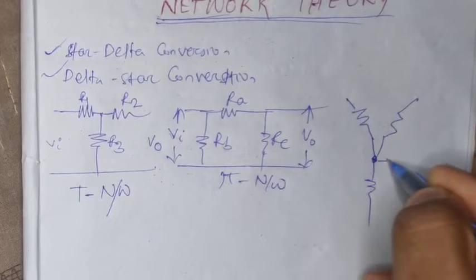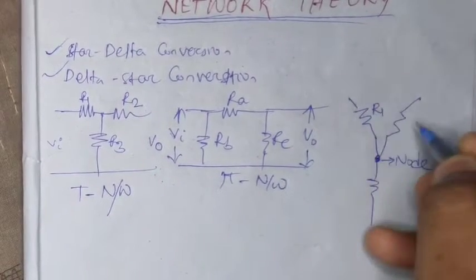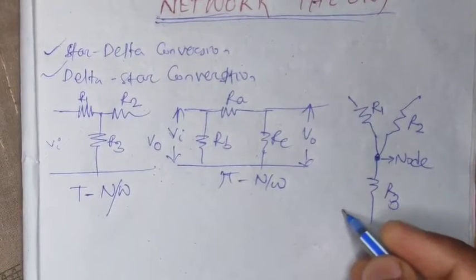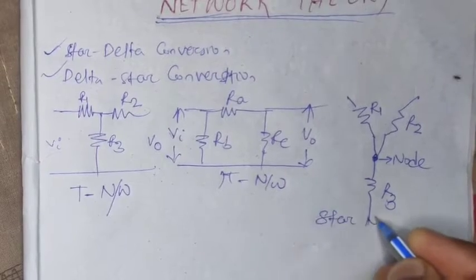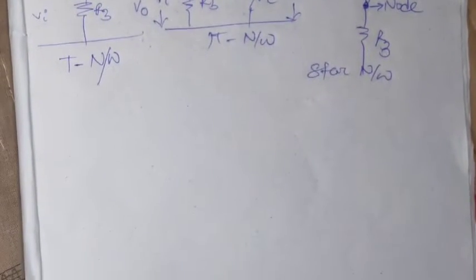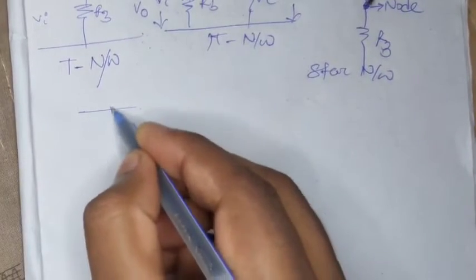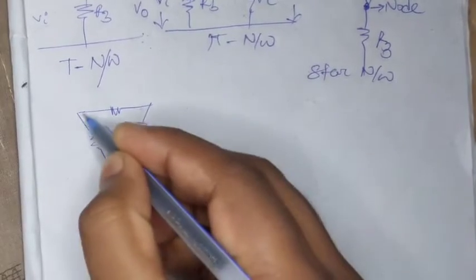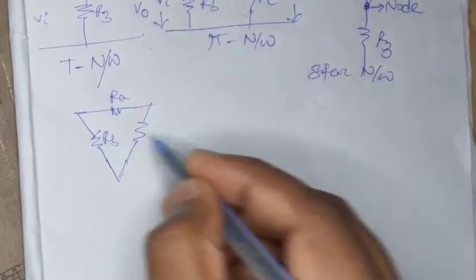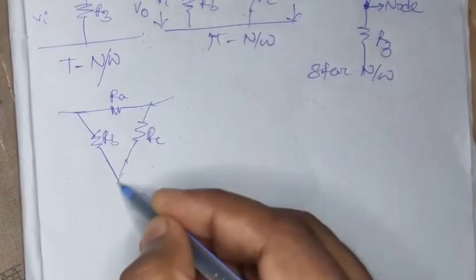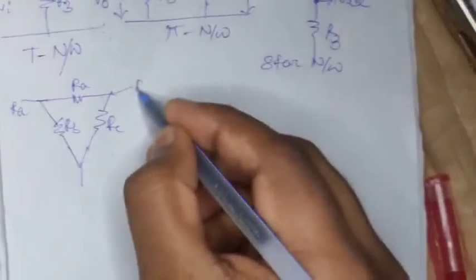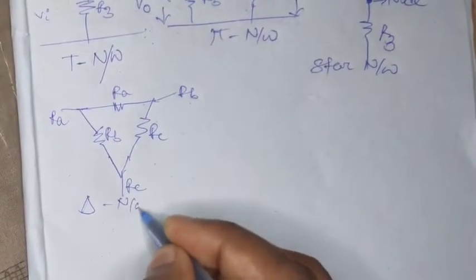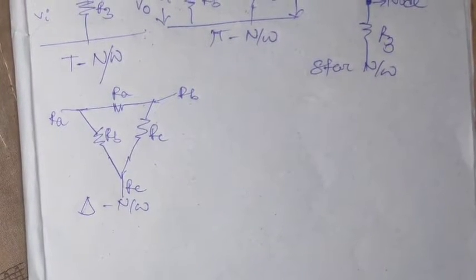There is another figure called the star network. This is a star-like structure where there is one node in the middle connecting resistances R1, R2, and R3 — that is why it is called a star network. Similarly, there is the delta network, which is like a triangle with resistances Ra, Rb, and Rc. This is our delta network.